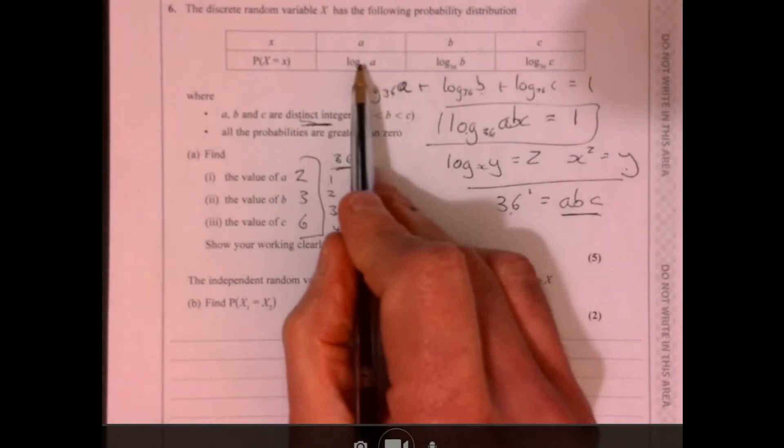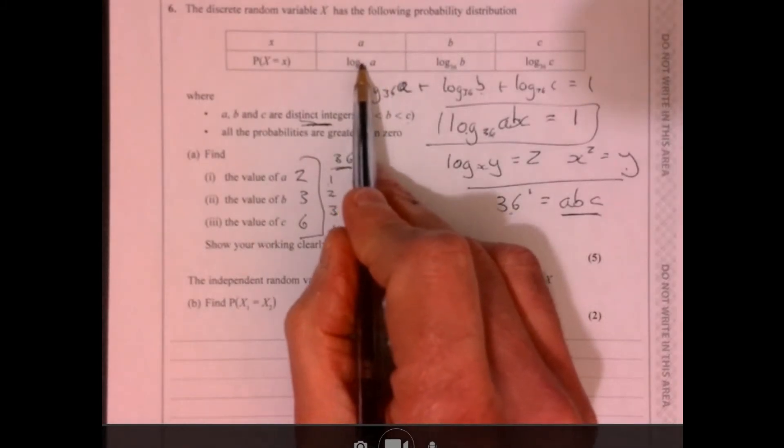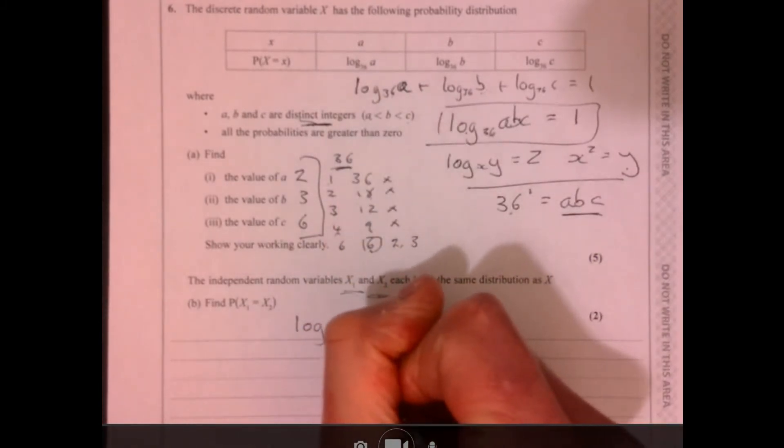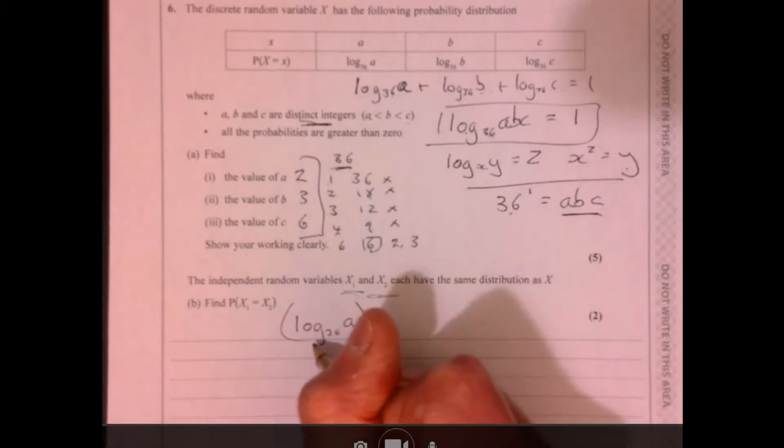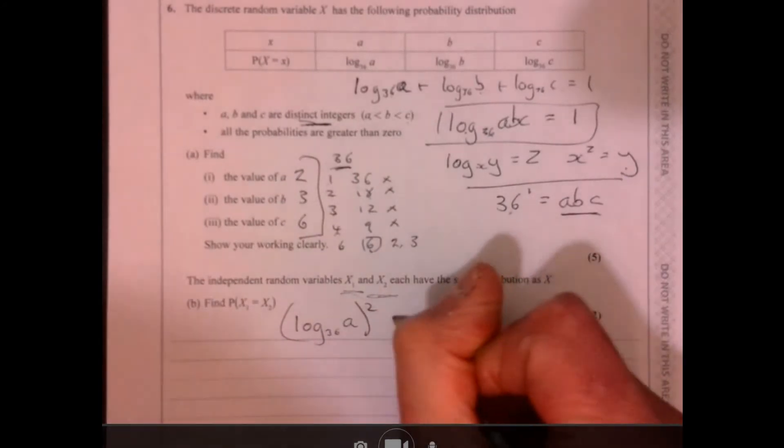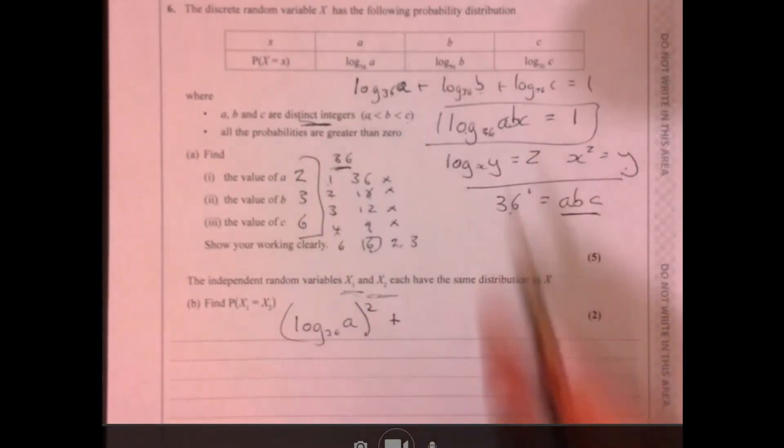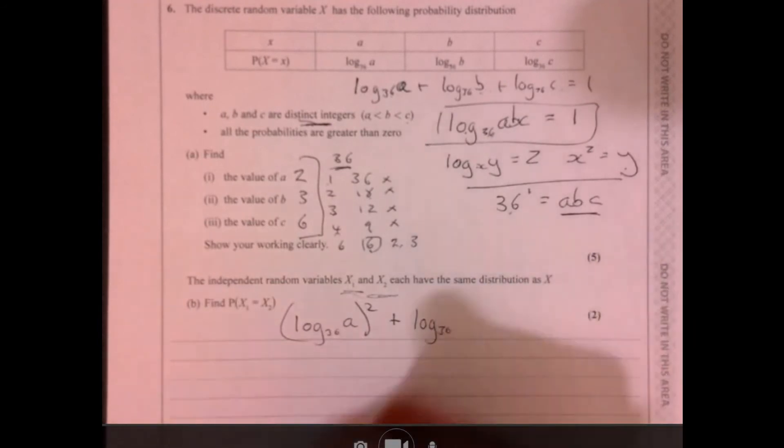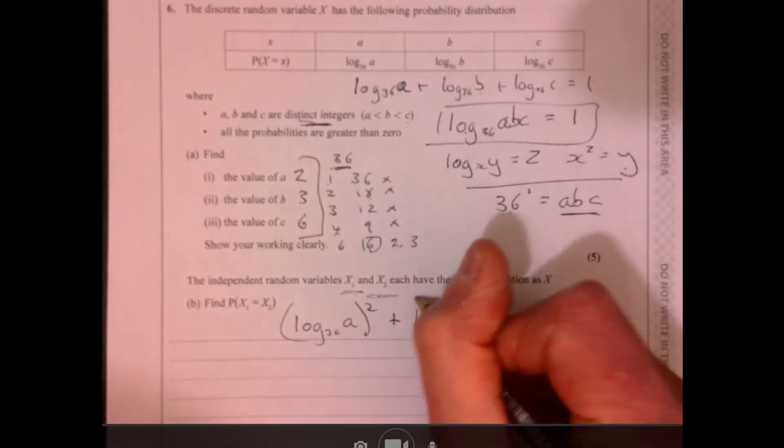all we're talking about is when are these things going to be the same? So, they're going to be the same if this happens twice, yeah? So, that would be the log x36a, so that would happen once, followed by it happening again. Or, it could be this one happening,